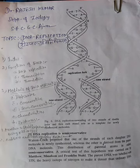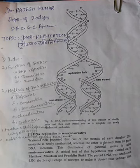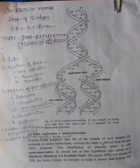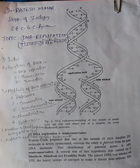The experimental proof of the semi-conservative method of DNA replication was carried out by Taylor and co-workers in 1957 and by Meselson and Stahl. Watson and Crick proposed that one strand of each daughter DNA molecule is newly synthesized whereas the other is derived from the parent DNA molecule. This distribution of parental atoms is called semi-conservative.